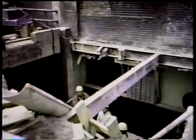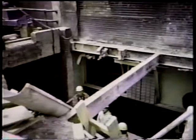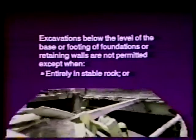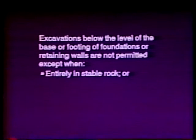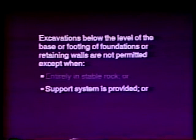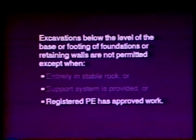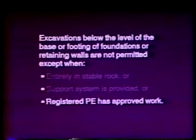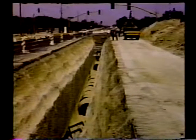Workers may also face hazards where the stability of adjacent buildings, walls, or other structures is endangered by excavation operations. Support systems such as shoring, bracing, or underpinning must be provided to ensure the stability of such structures for the protection of employees. Excavation below the level of the base or footing of any foundation or retaining wall that could be reasonably expected to pose a hazard to employees is not permitted, except when the excavation is entirely in stable rock, or a support system such as underpinning is provided, or a registered professional engineer has approved the determination that the structure is far enough away not to be affected. Sidewalks, pavements, and pertinent structures may not be undermined unless a support system or another method of protection is provided to protect employees from possible collapse.